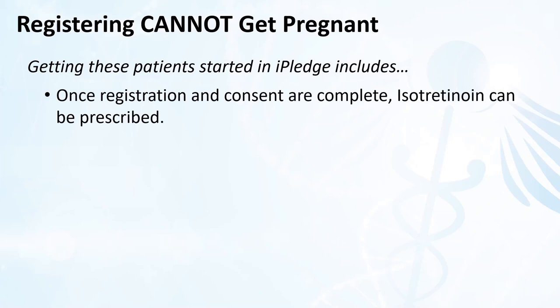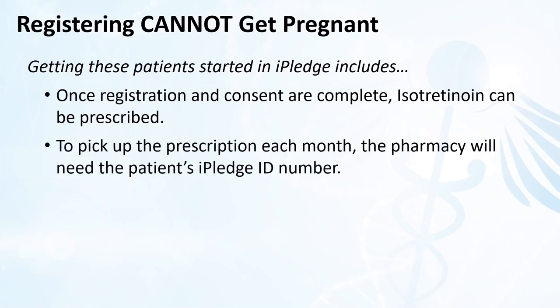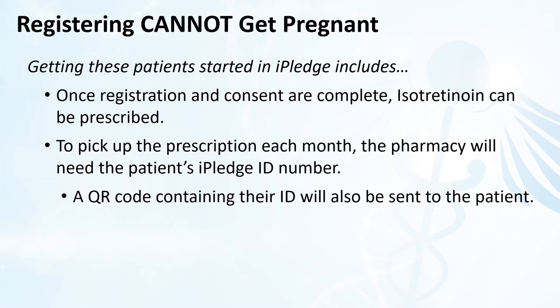Once the registration and consent process has been completed, isotretinoin can be prescribed. For cannot-get-pregnant patients, the only remaining requirement is that in order to pick up the prescription at the pharmacy, the pharmacy will need the patient's iPledge number. During the registration process, iPledge will send the patient links and information, which include a QR code they can keep on their phone and show to the pharmacist.